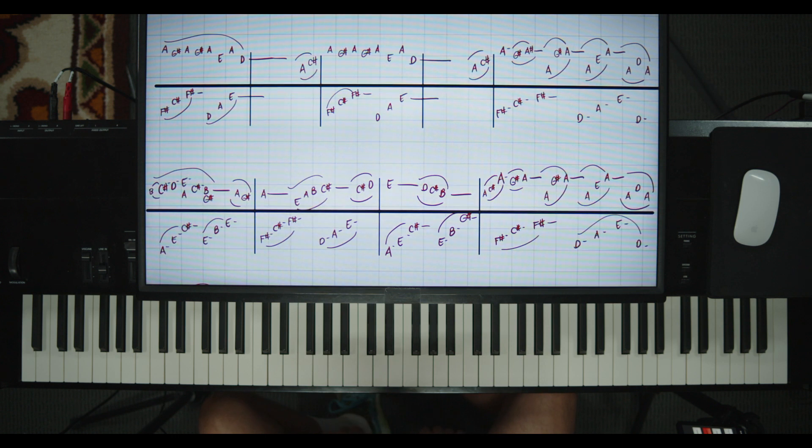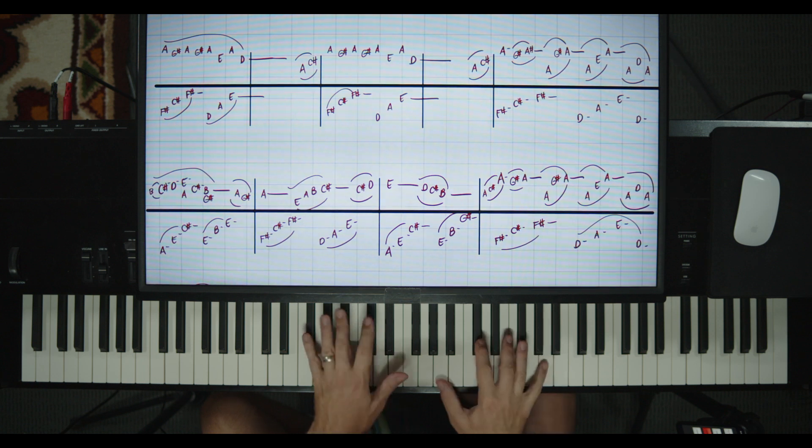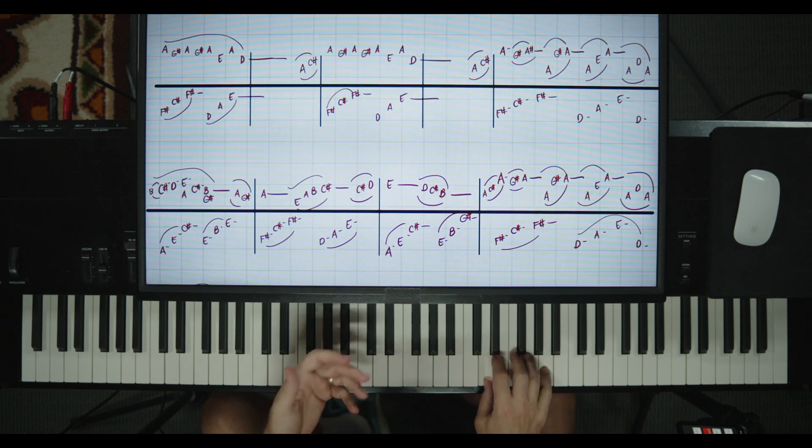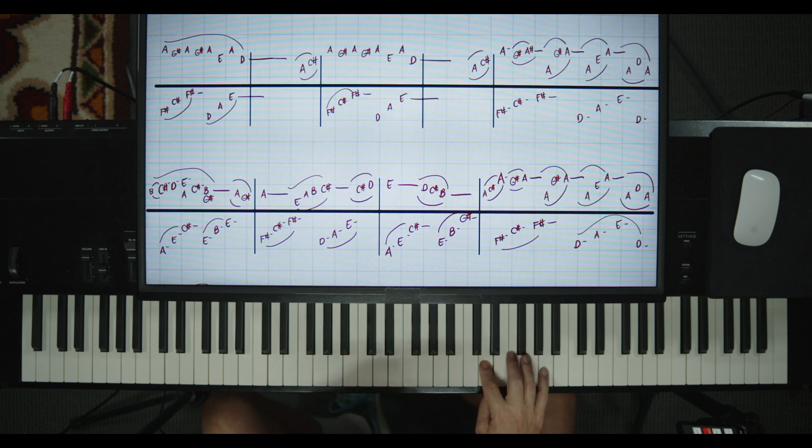So the next one's a lot the same. The only difference is you have this little ba-ba-bum, the A, C sharp before it. So you just, you know, you get in position. A, C sharp can be with one and two. And then you're off to the races. The next one. One, two, three, four.